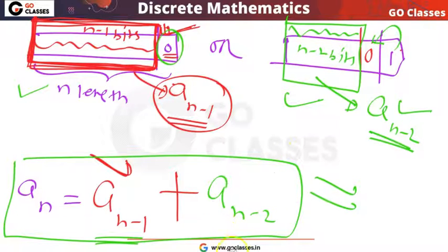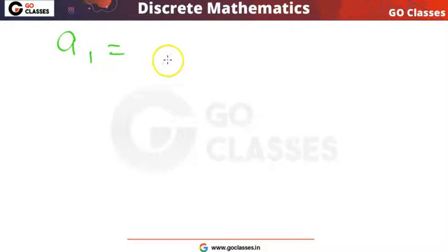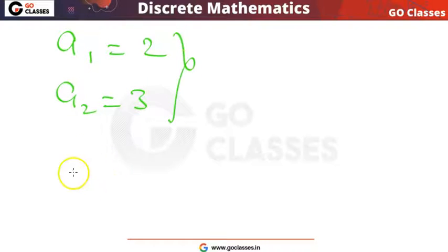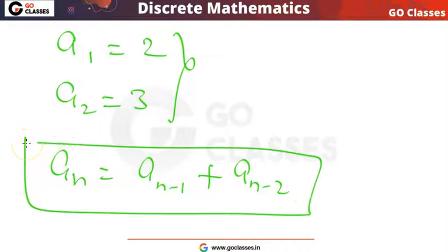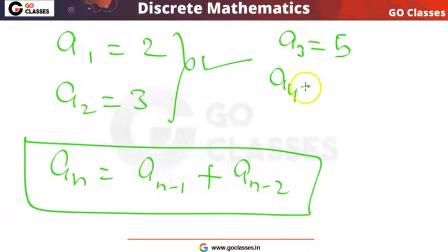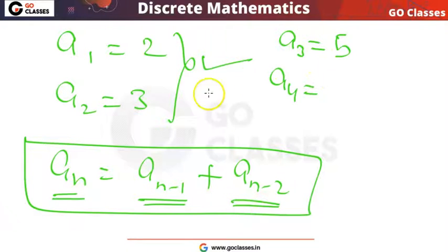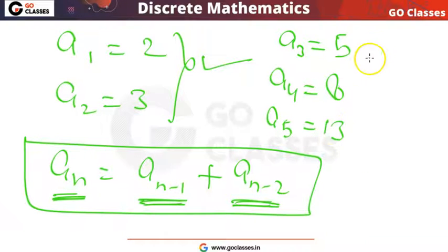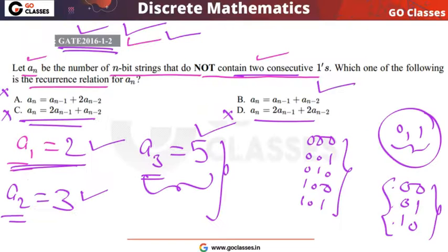The initial conditions we have already seen: A1 = 2 and A2 = 3. The recurrence relation is Aₙ = Aₙ₋₁ + Aₙ₋₂. We can easily find A3 = A2 + A1 = 5. A4 = A3 + A2 = 8. A5 = A4 + A3 = 13.